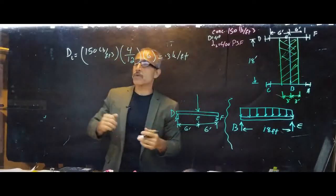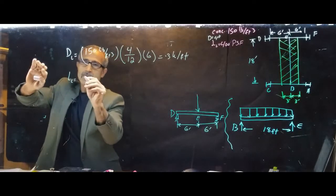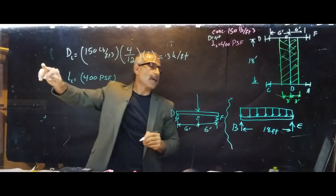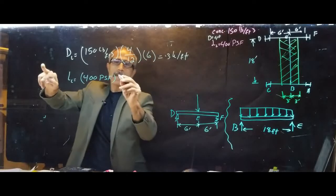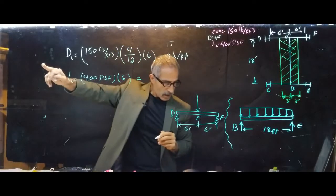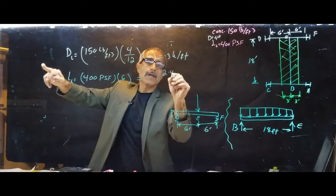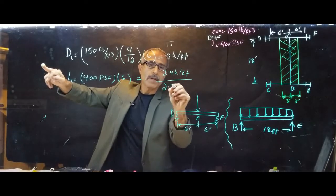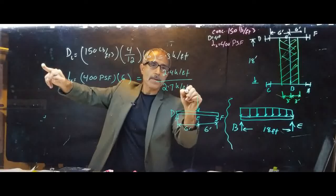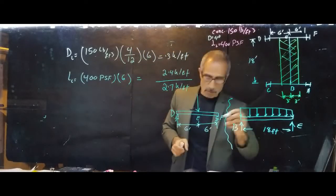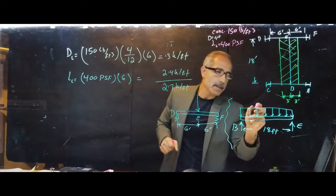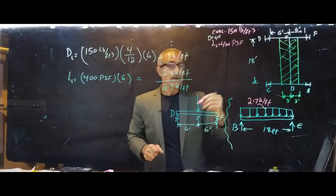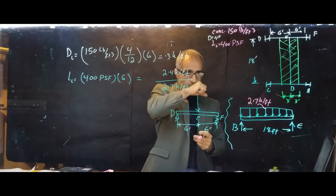That's my dead load: 0.3 kips per foot. And the live load was given as 400 pounds per square foot. So the live load is 400 pounds per square foot or 0.4 kips per square foot, and it's going to be times six feet. So I'm going to have times six feet, and that's 2.4 kips per foot. And if I add those two up it's going to be 2.7 kips per foot. So this is going to become 2.7 kips per foot.